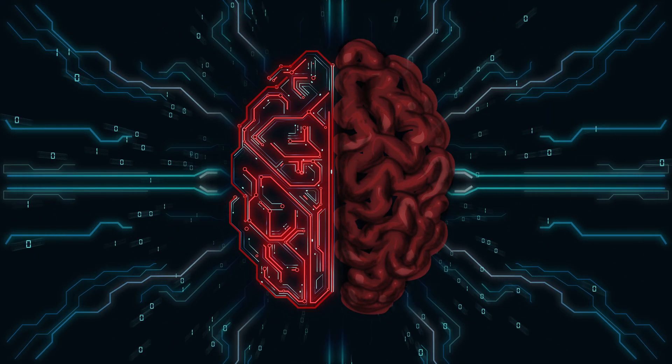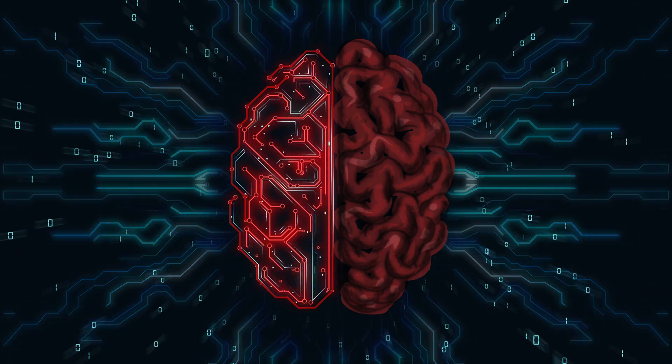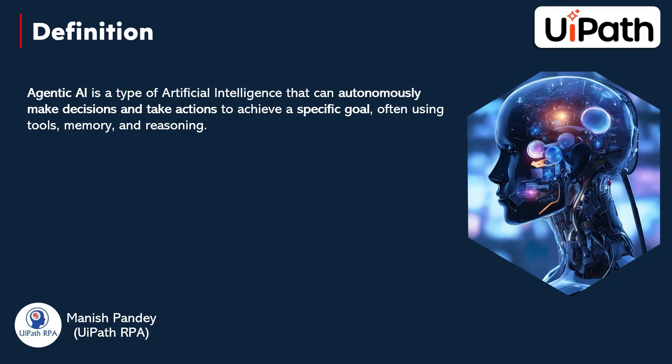It figures out how to achieve the goal using its intelligence, and here intelligence means agentic AI. The definition of agentic AI: agentic AI is the type of artificial intelligence that can autonomously make decisions and take actions to achieve a specific goal, often using tools, memory, and reasoning. Autonomously means it has the capability to make decisions and act independently.